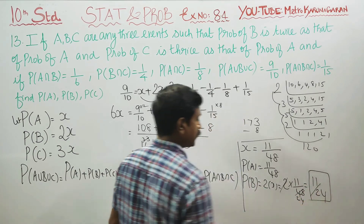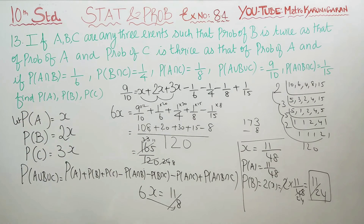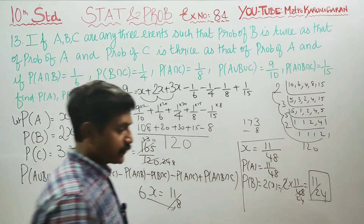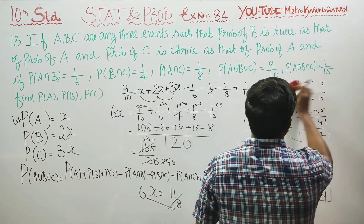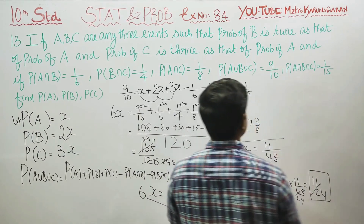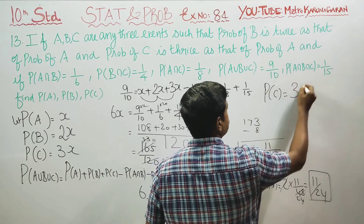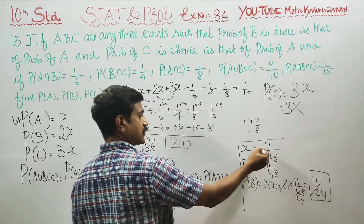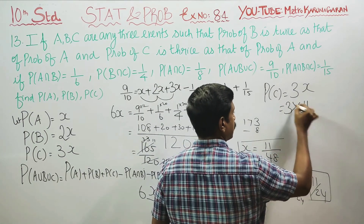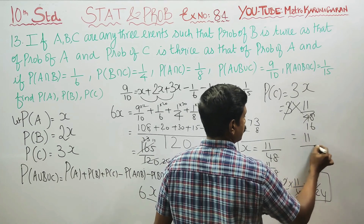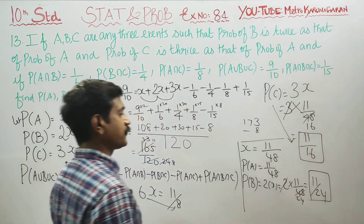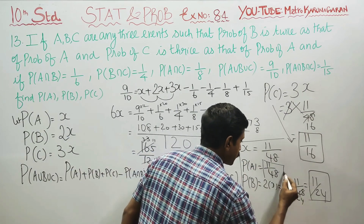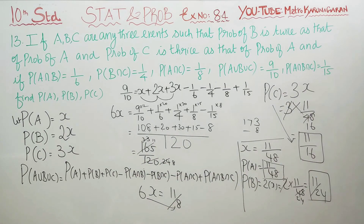Probability of C is 3 times X, so probability of C equals 11 by 16. This is the probability of C. We now have all three results: probability of A, probability of B, and probability of C. Thank you.